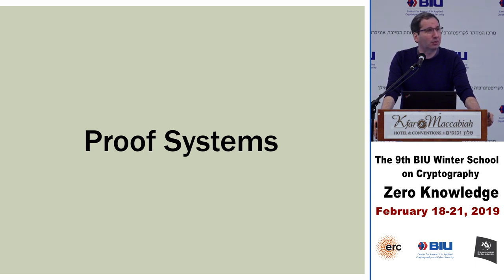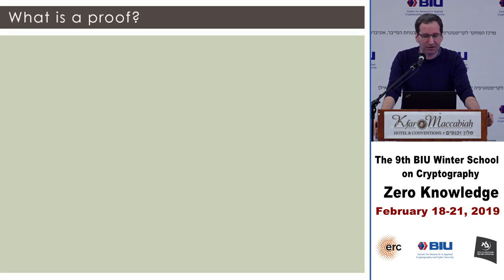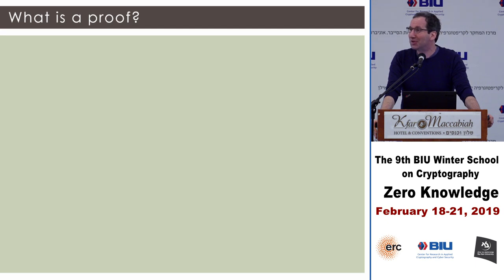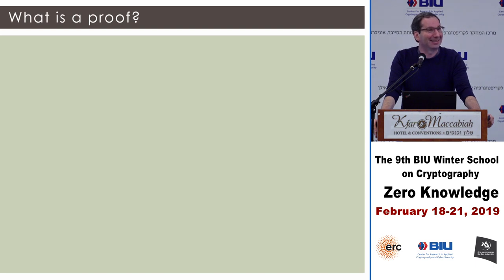We'll start with a more general notion than zero knowledge proofs: proof systems in general. The first question is: what is a proof? I'd like you to pause for a second and think — what is a proof? Maybe some members of the audience have a suggestion.